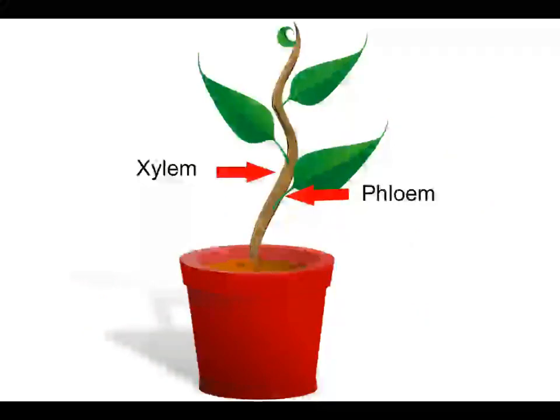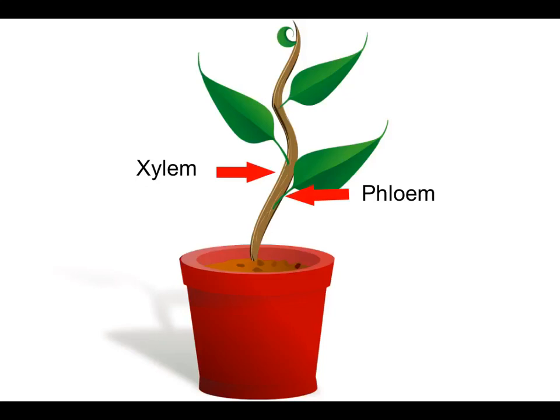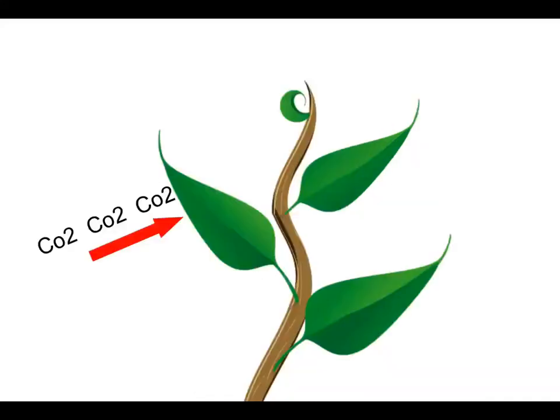In the roots there are tubes called the xylem and the phloem. These tubes help in bringing water and minerals from the soil into its leaves. The leaves breathe in carbon dioxide from tiny pores which are called stomata.